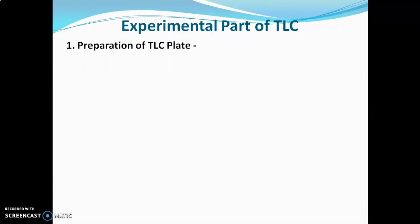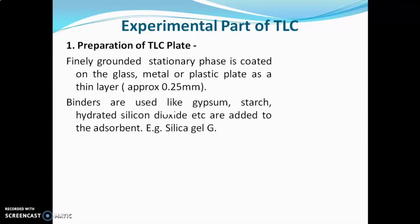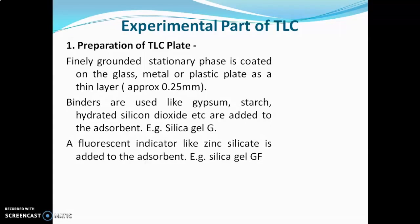The first step is preparation of TLC plate. Finely grounded stationary phase is coated on the glass, metal, or plastic plate as a thin layer. The approximate thickness of the layer should be 0.25 mm. Binding agents such as gypsum, starch, or hydrated silicon dioxide are added to the adsorbent. Commonly used adsorbent is silica gel, which is non-adhering to the glass or metal plate, so some binding agent must be added. If the binding agent is gypsum, the name on the bottle is silica gel G, where G stands for gypsum. A fluorescent indicator like zinc silicate can also be added; the name then becomes silica gel GF, where G is for gypsum and F is for fluorescent indicator.